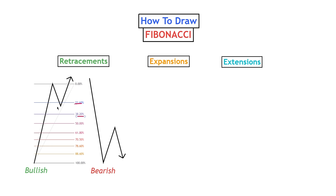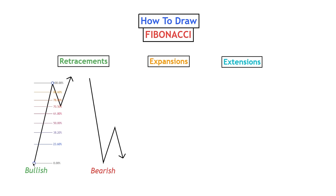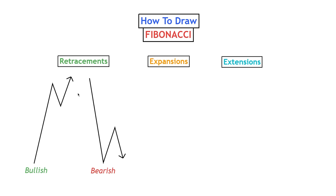If we take the impulsive move, measure it out, and compare it to the corrective move, we can see that it retraced about 25 percent — which is the whole purpose of the Fibonacci retracement tool and why it only works on corrective movements. This is also why we don't want to start by connecting to the high first and then to the low for bullish impulsive moves, because then these levels would be flipped upside down — we only retraced about 25 percent, not 70.